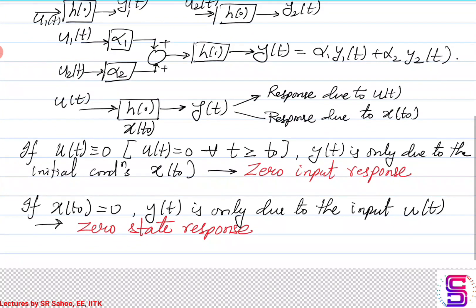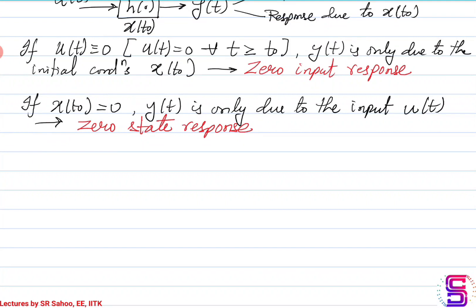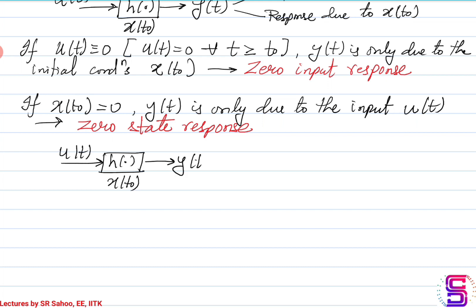We will discuss this in detail for the linear system. Now, coming to time invariance: the system is subjected to an input and has the initial condition x(t0) and gives output y(t). Now let's say we take the same system and consider a time instant tau that happens after the initial time t0.